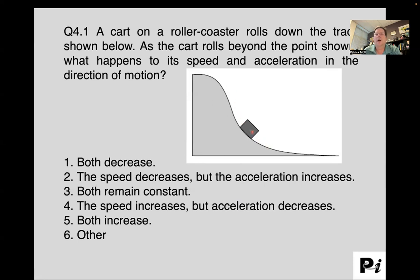A cart on a roller coaster rolls down the track, as shown below. So there's our cart. As a cart rolls beyond the point shown, what happens to its speed and acceleration in the direction of motion? So think about what you think the answer is. Talk it over with your physics friends. And then, when you're ready, unpause the video, and let's see what the answer is.